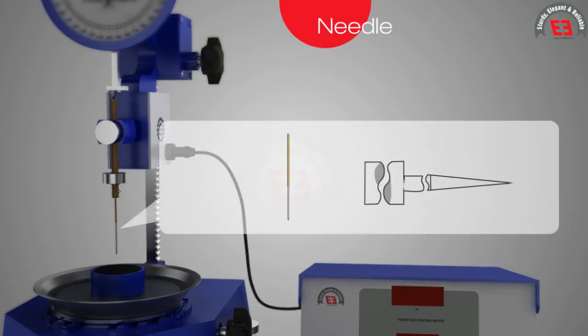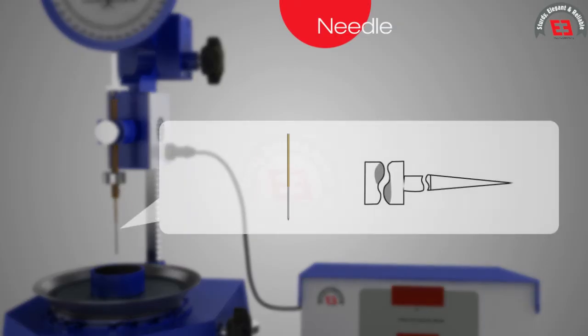Needle. It is straight, polished, cylindrical stainless steel needle of total length 50 mm and diameter 1.0 mm with a pointed end of 0.14 to 0.16 mm diameter.